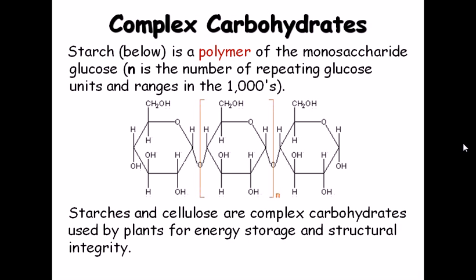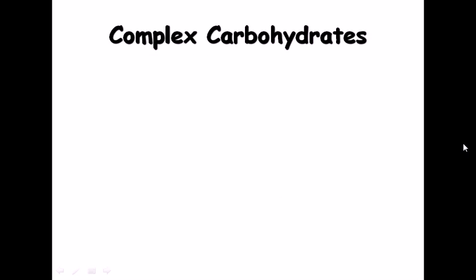Starches as well as cellulose are complex carbohydrates used by plants. On the other hand, glycogen is stored inside the muscle tissue of animals. Both of these complex carbohydrate polymers can act as energy storage and also provide structural integrity.